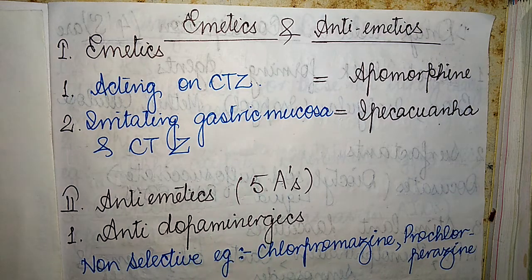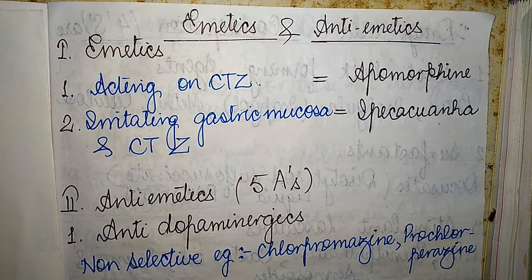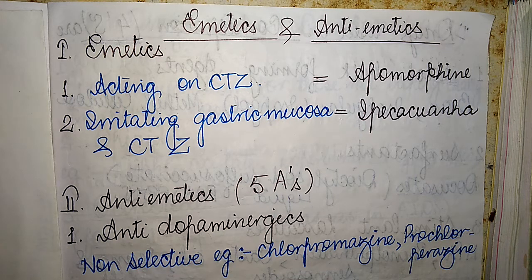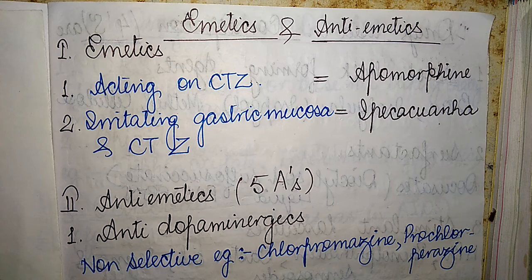The chemoreceptor trigger zone is an area of the medulla oblongata that receives inputs from blood-borne drugs or hormones and communicates with other structures in the vomiting center to initiate vomiting.